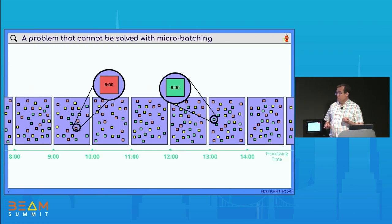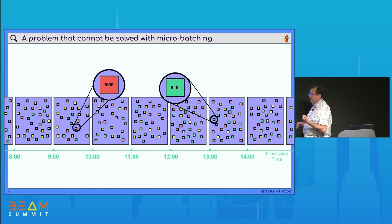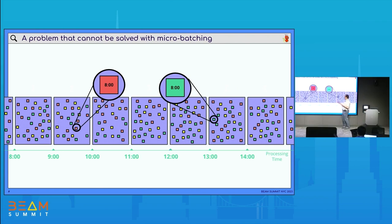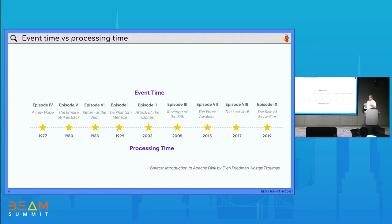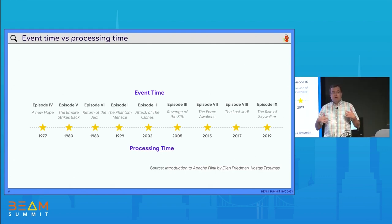Microbatching is not a solution for this. The problem is that the time when we see the messages and the time when the messages were produced is not the same dimension of time. Just grouping things as we receive them is not enough. We need to do a smarter grouping, because we have two dimensions of time. We have the so-called processing time and event time. Processing time is when we get to see things; event time is when they were actually produced.